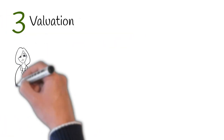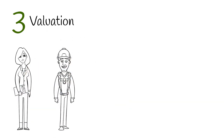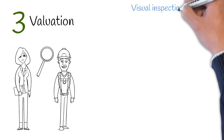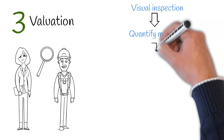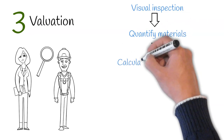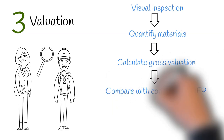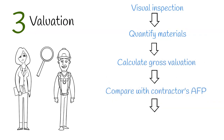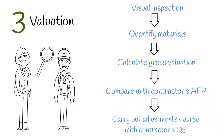Stage 3: Valuation. This is where the employer's quantity surveyor will need to meet with the contractor's quantity surveyor on site and inspect the works that have been carried out. They would need to assess the work carried out for revision inspection and quantify the materials on or off site. From here, they would calculate the sums required for the gross valuation and see how this ties up with the contractor's application for payment. They would then carry out adjustments and provide reasons for the adjustments. The valuation is then agreed with the contractor's quantity surveyor.